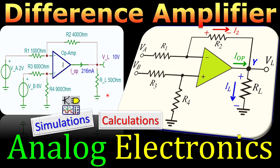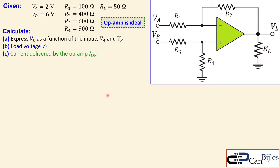We will look at the calculations step by step and also verify our calculations in SPICE simulations. In this circuit, the triangle represents the op amp, considered to be ideal. We have two input voltages Va and Vb — two volts and six volts — four resistors R1, R2, R3, and R4, a load resistance, and a load voltage. We would like to calculate three things: the expression for the load voltage as a function of Va and Vb, the load voltage itself, and the current delivered by the op amp.